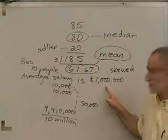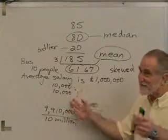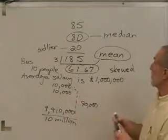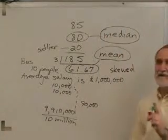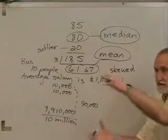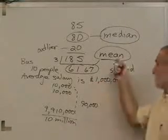Because 9 out of 10 of those people make $10,000 a year. So the median is always a better representation of the middle of a set of data than the mean is.